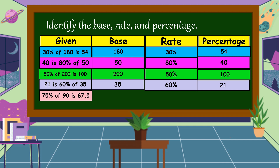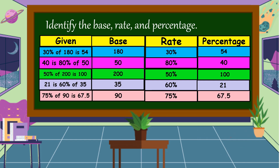Next example: 75% of 90 is 67.5. What is our base? The base is 90. How about the rate? The rate is 75%, and the percentage is 67.5.